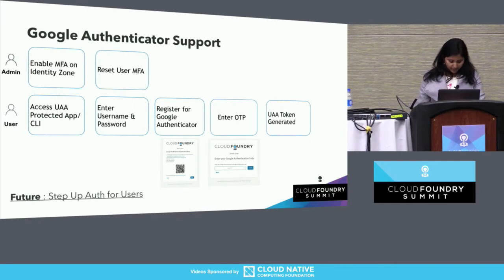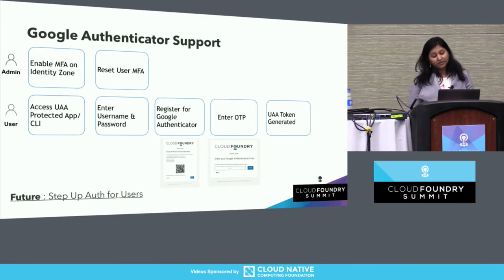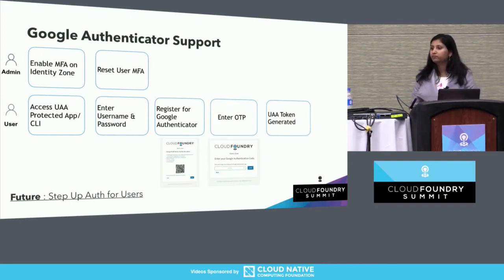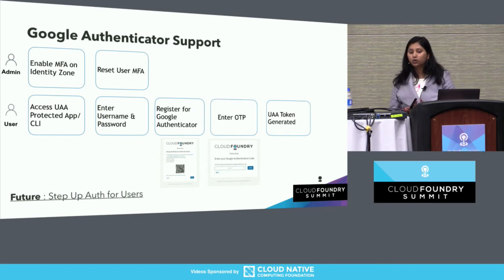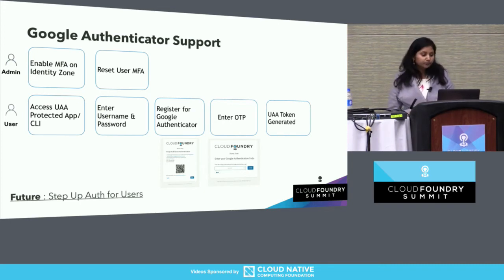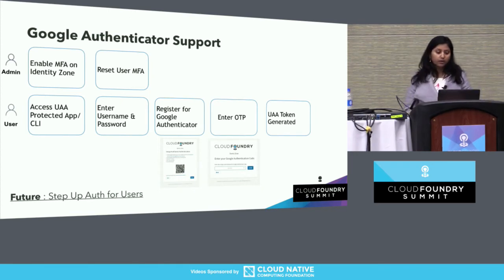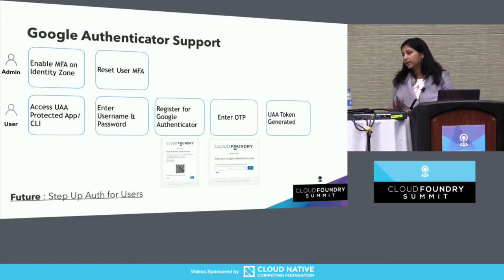The first and most important new feature added in the past few months is Google Authenticator support. The Google Authenticator app generates one-time codes based on TOTP — the time-based one-time password. From a UAA perspective, we are looking at two personas: the administrator persona and the end-user persona. The end-user could be a developer or an app end-user — any user accessing an application protected by UAA.